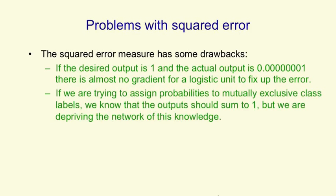Also, if we're trying to assign probabilities to mutually exclusive class labels, we know that the output should sum to one. Any answer in which we say the probability that it's an A is three quarters, and the probability that it's a B is also three quarters, is just a crazy answer.